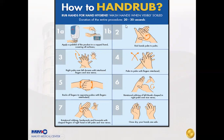Perform the six steps of hand hygiene for hand rubbing: (1) rub hands palm to palm; (2) right palm over left dorsum with interlaced fingers and vice versa; (3) palm to palm with fingers interlaced; (4) back of fingers to opposing palm with fingers interlaced; (5) rotational rubbing of left thumb clasped in right palm and vice versa; (6) rotational rubbing backwards and forwards with clasped fingers of right hand in left palm and vice versa. Once dry, your hands are safe.